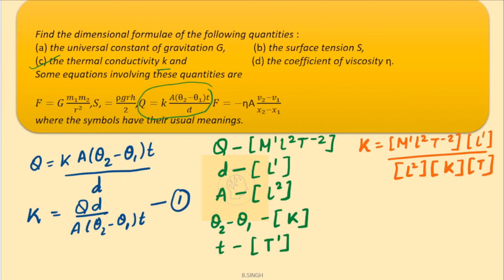So, this l square over here and this l square over here, they get cancelled and we left with m1 and l1, this l1 and t to the power minus 2 and 1 t is here. When it goes on the top, it becomes t to the power minus 3 and k to the power minus 1. So, this is the dimensions of k thermal conductivity.